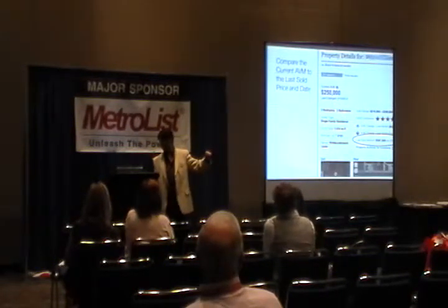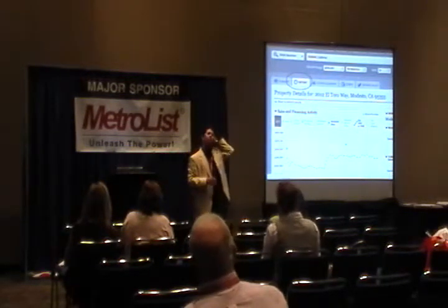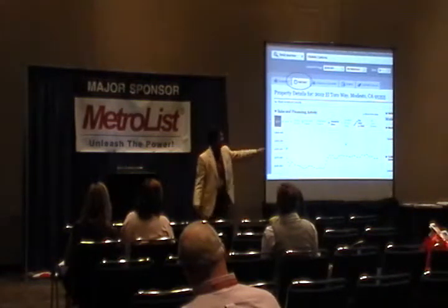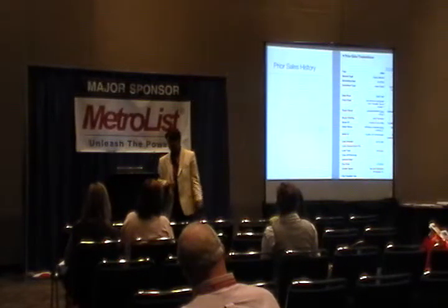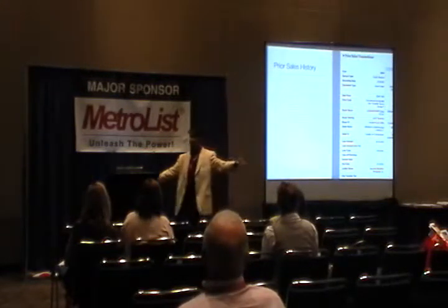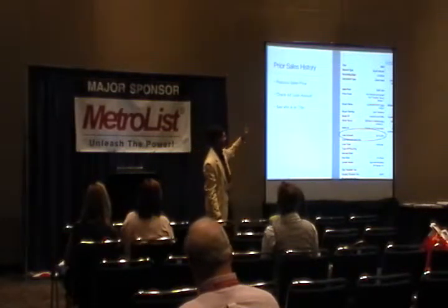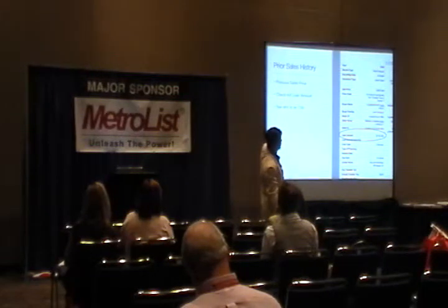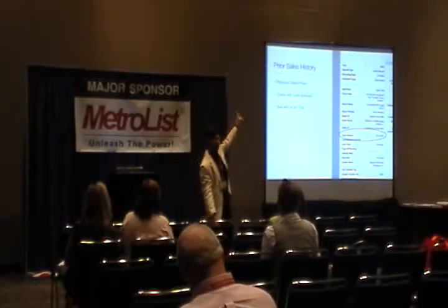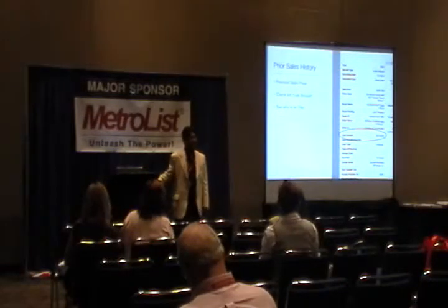The next tab I like to go to is the History tab, which gives me all the data I would normally get from my property profile report from my title company. I get to see the history of what the value has done over time, over the last seven years. From a lead generation standpoint, I'm looking at the prior sales history — I can check the sales price and see what the loan amount was at the time they bought the property. This one was done in 2004 with a loan amount of $310,000 on a purchase price of $250,000 — so there's a pretty good chance they're still upside down on this house.